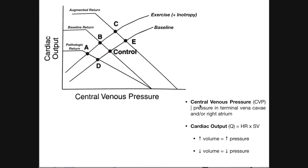Generally speaking, as we increase the central venous pressure — meaning as we increase the pressure in the right atrium — cardiac output is going to increase, which is why this slope is positive. As we increase the amount of blood in the right atrium, which increases the pressure there, we get a better cardiac output. Increased volumes always lead to increased pressures, and decreased volumes lead to decreased pressures. So a higher volume in the right atrium means higher central venous pressure, which means greater cardiac output because there's more driving force for pumping that blood through the heart.